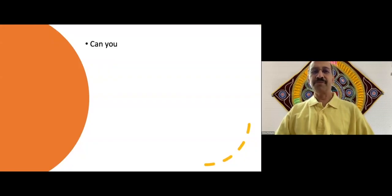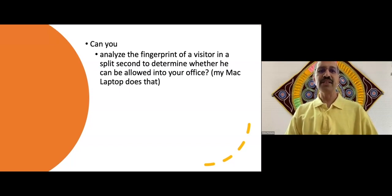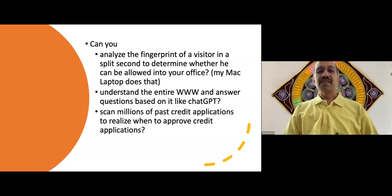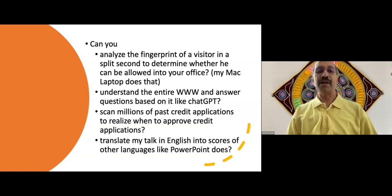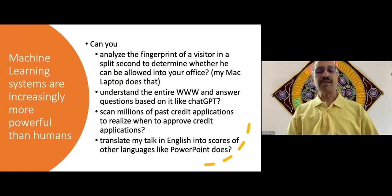So it is therefore important that the use of artificial intelligence is ethical and conforms to human values. To give you an overview of what artificial intelligence can do, let us compare our potential with the potential of artificial intelligence. Can you analyze the fingerprint of a visitor in a split second to determine whether he or she can be allowed into your office? My Mac laptop does that. Or can you understand the entire World Wide Web and answer questions based on it like ChatGPT? Scan millions of past credit applications to realize when to approve credit applications? Or translate my talk in English into scores of other languages like PowerPoint does? As you can see, PowerPoint is currently translating my spoken words into English, but I can change the language as well.